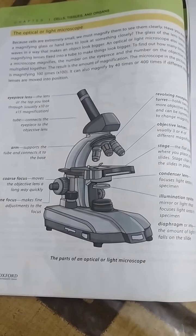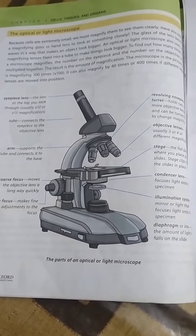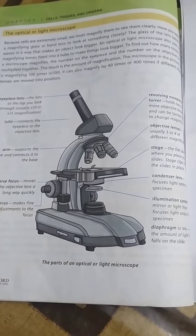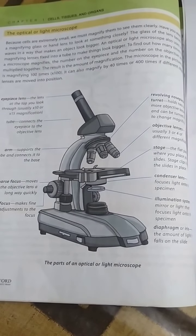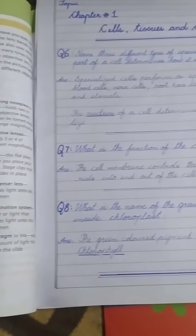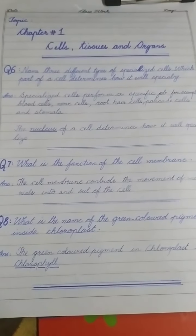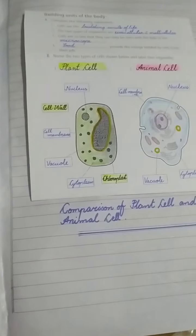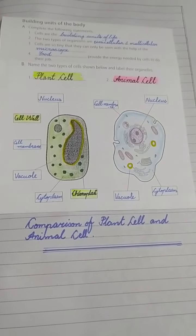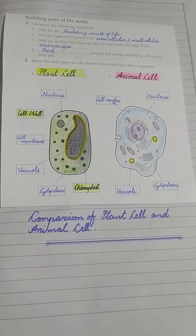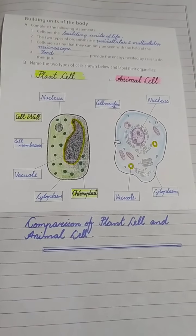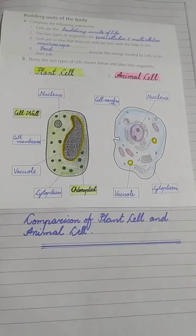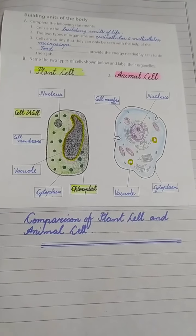Good morning grade 6 students. Today I am going to help you write your question answers in your journals, how to decorate them, and give you a quick recap. We have done the reading of pages 1, 2, and 3: what are living things made of? The unit name is cells, tissues, and organs. All living things are made of cells.